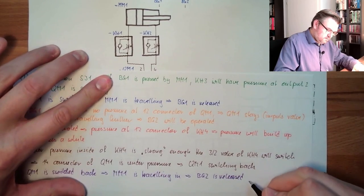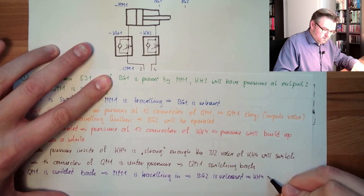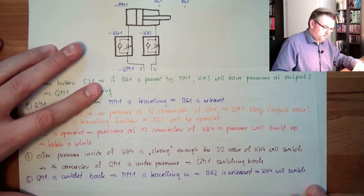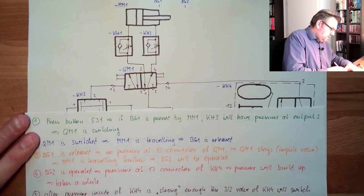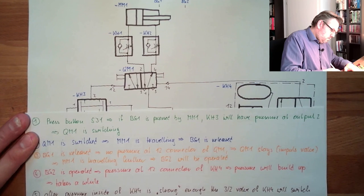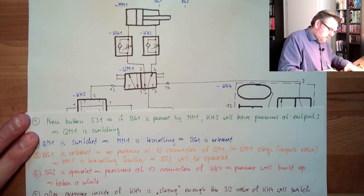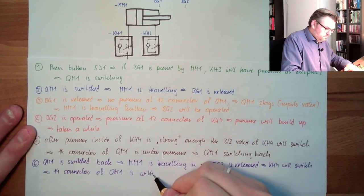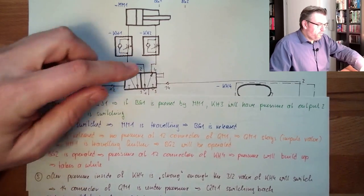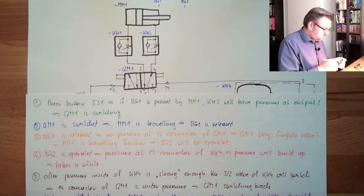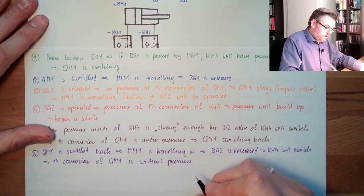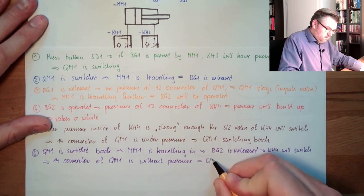If PG2 is released, this will get immediately out of pressure. This will get immediately out of pressure. We have no pressure at all. Because it is a check valve, a throttling check valve. And this will switch back. So 1.4 is without pressure. PG2 is released. This means KH4 1.4 will switch also back. So this means 1.4 connector of QM1 is without pressure.